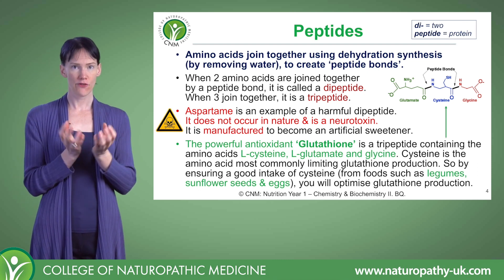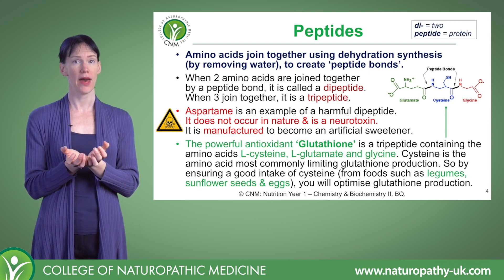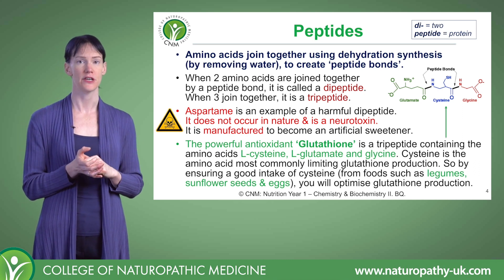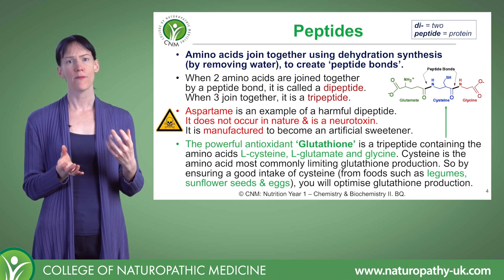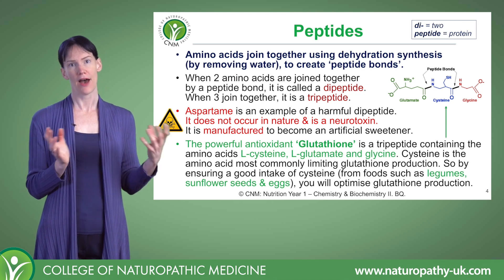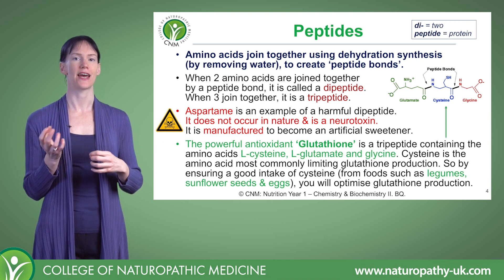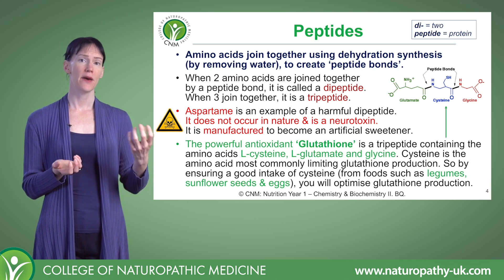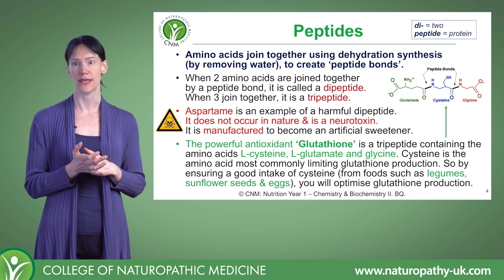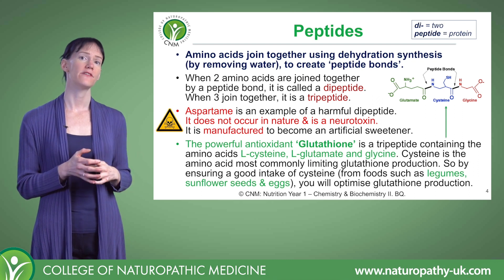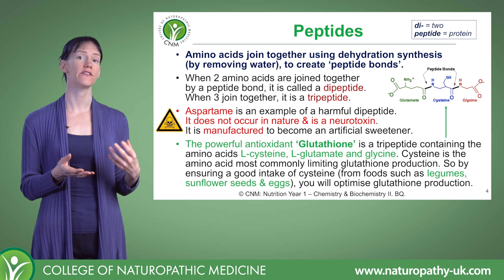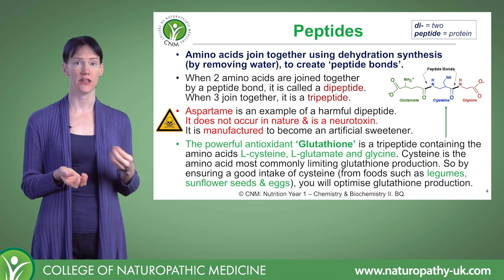Within that recipe for glutathione, cysteine is normally the limiting amino acid — meaning it's the one we tend to have the least of. We have an abundance of glutamate and glycine in our diets, so the amount of cysteine limits how much glutathione we can make. Therefore one way to support antioxidant defences is to increase consumption of cysteine-rich foods.